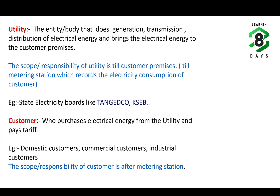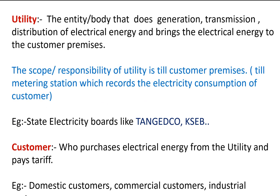Before going further, we have to understand a few terms. What is a utility? A utility is an entity or body that does generation, transmission, and distribution of electrical energy, and brings the electrical energy to the customer premises. All the systems and processes involved in bringing down electrical supply to our household or to the customer premises is called a utility.